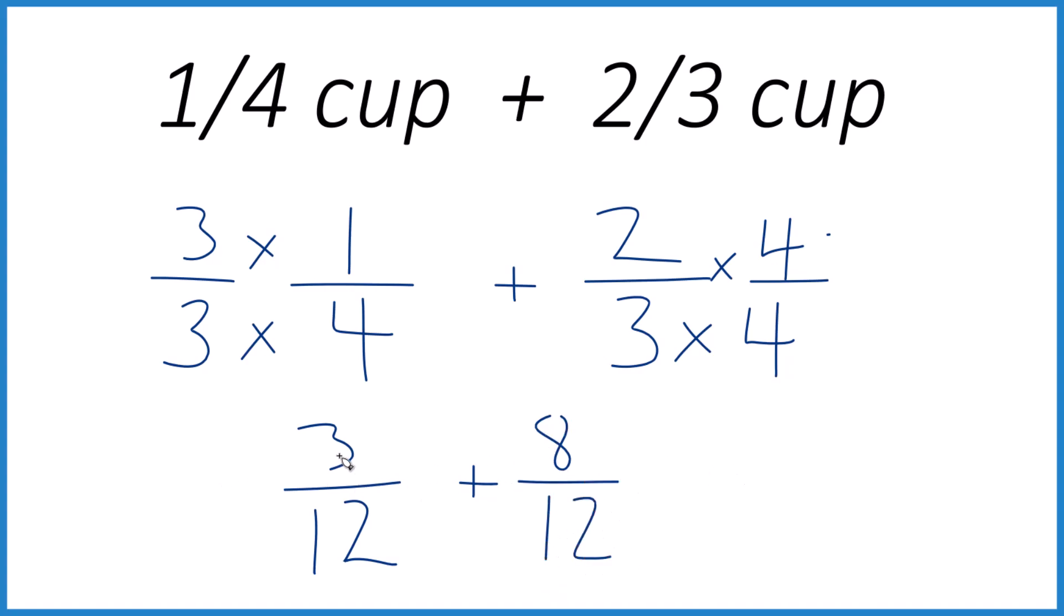And now I just add them together. Three plus eight is 11, and then we keep the denominator the same, 12. And one-fourth plus two-thirds, it's 11-twelfths.